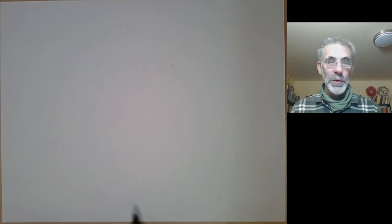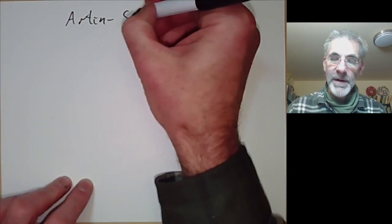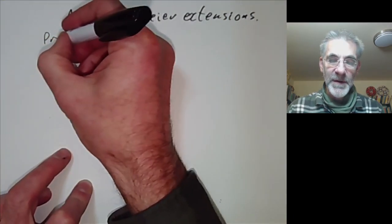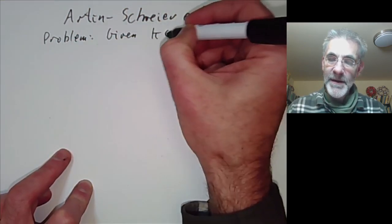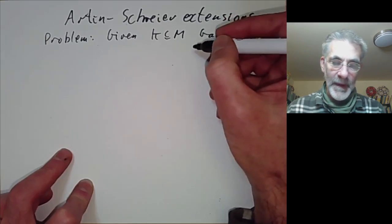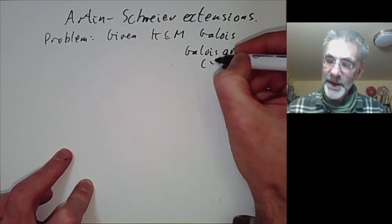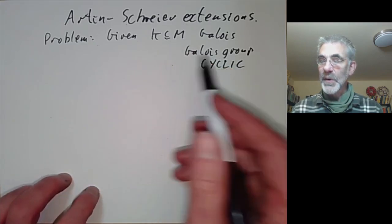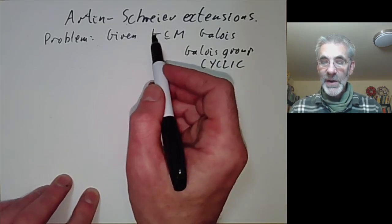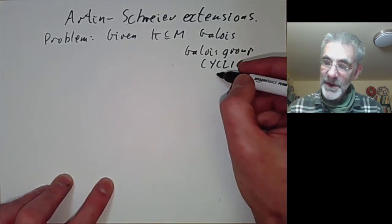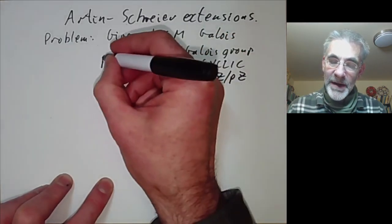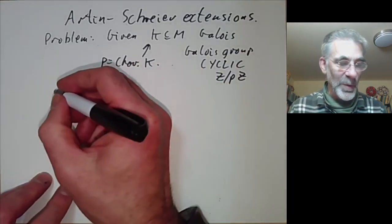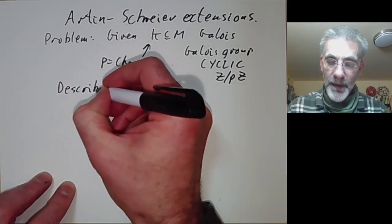This lecture is part of an online Galois theory course and will be about Artin-Schreier extensions. The problem is as follows: given an extension K contained in M which is Galois with cyclic Galois group, we want to describe what the extension M is. Last lecture we looked at the case where the Galois group is cyclic of order co-prime to the characteristic of K. This lecture we look at the case when the Galois group is cyclic of order P, where P equals the characteristic of K. So this makes the extensions completely different from what they were in the previous lecture.